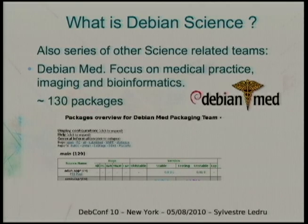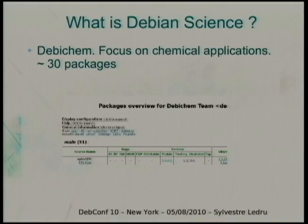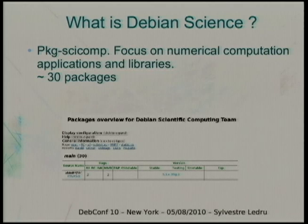Debian Science can also be seen as encompassing other teams. Some people have been working on specific science fields for the last few years. One of the biggest is Debian Med, mainly managed by Andreas and Charles Plessy — they've been packaging a lot of packages for a while. Another team is DebianChem, mainly Michael's work, about chemistry in Debian. The last one I'll mention is pkg-science-comp, mainly about numerical computing.